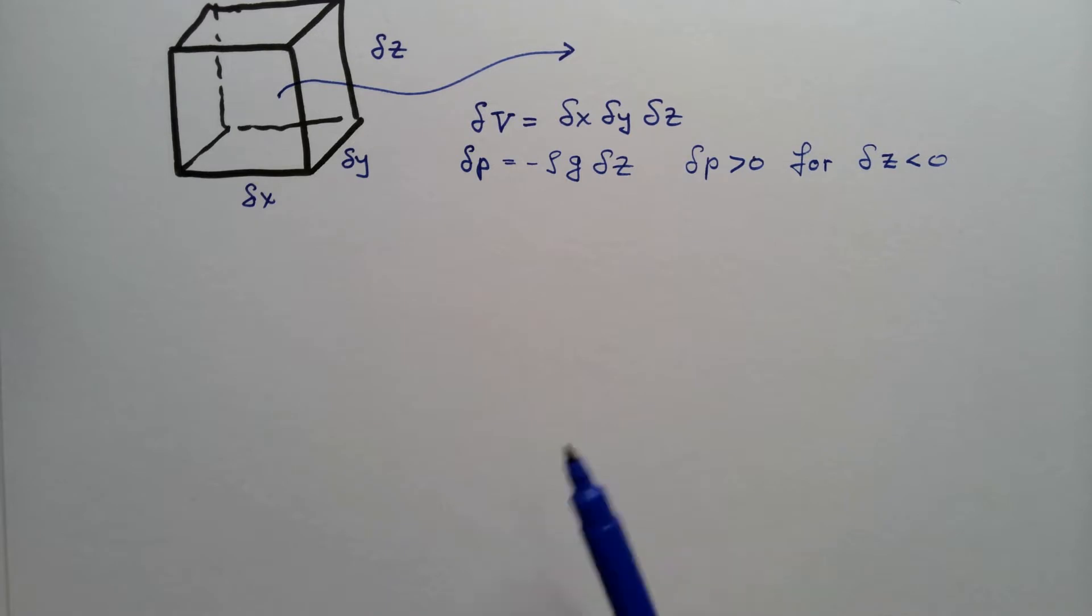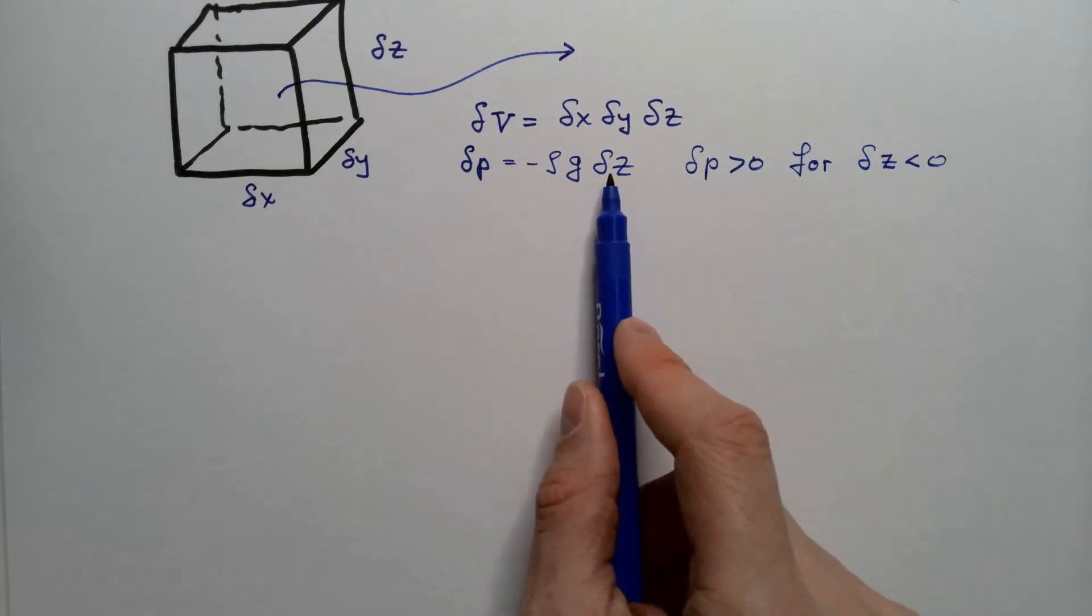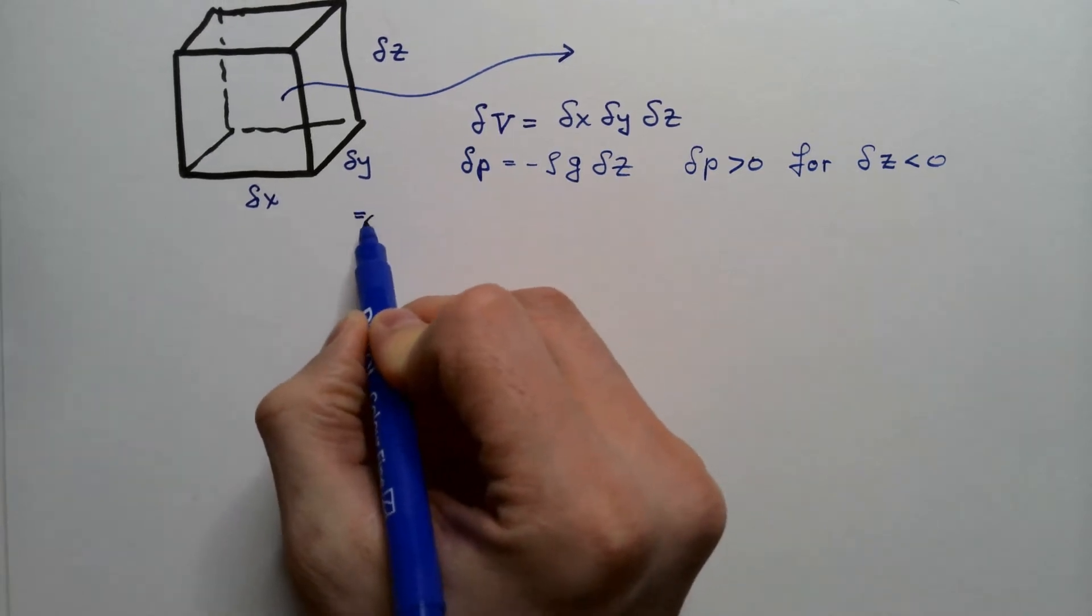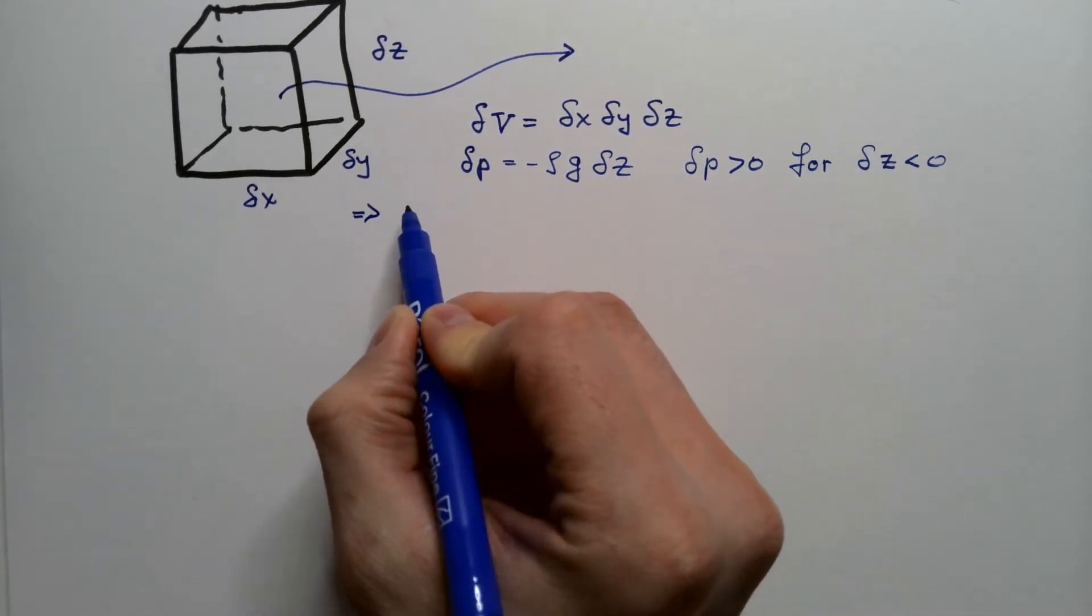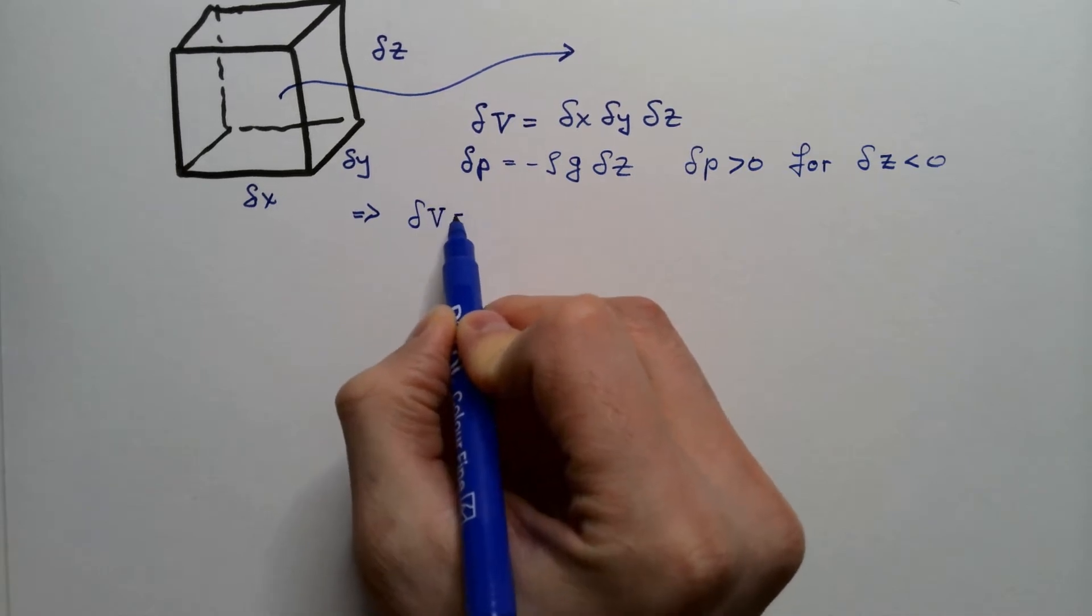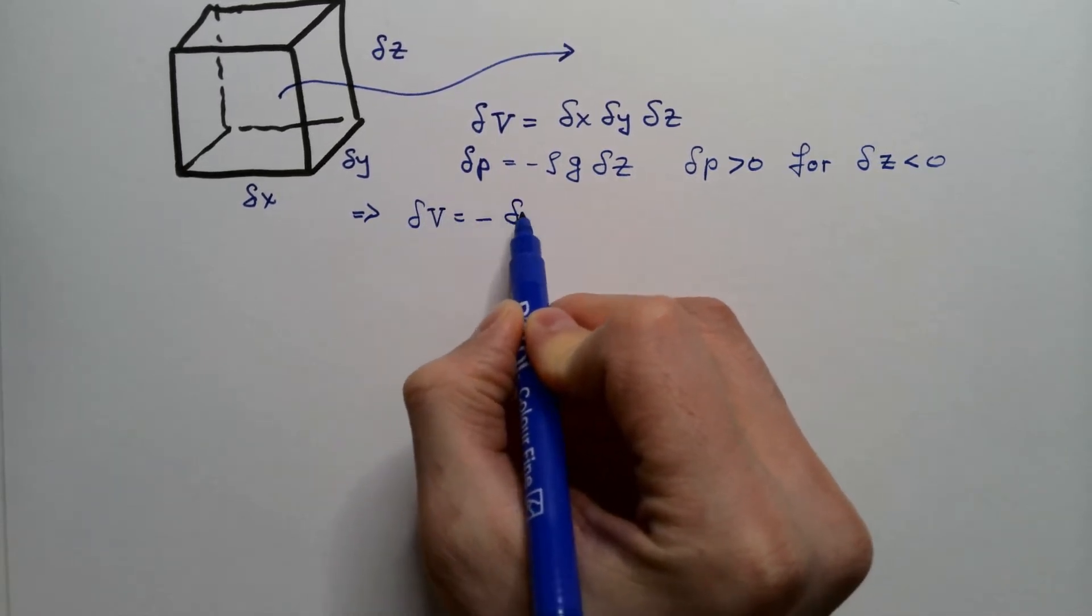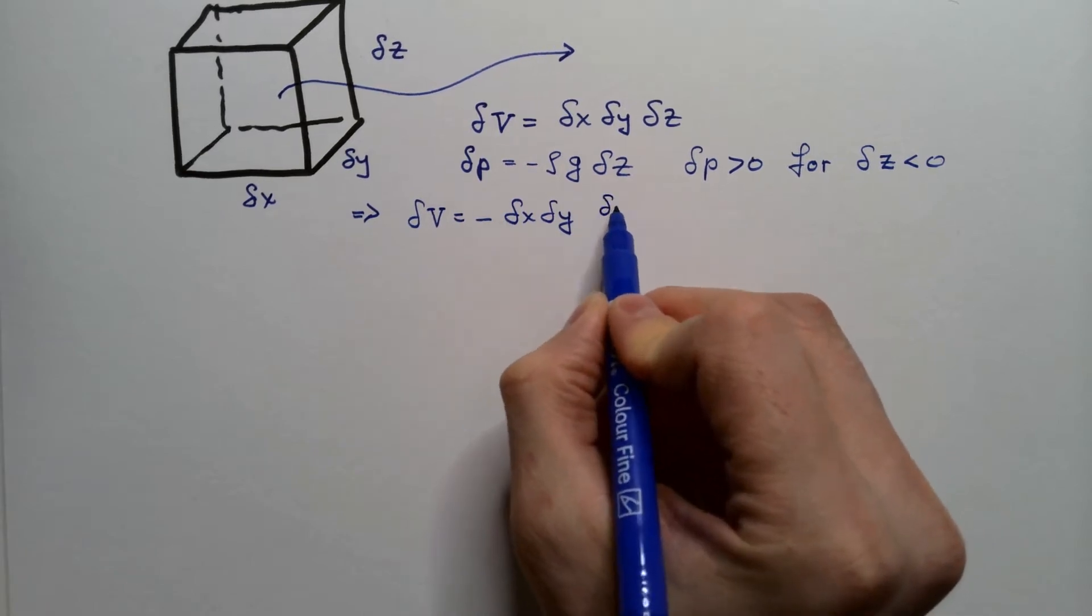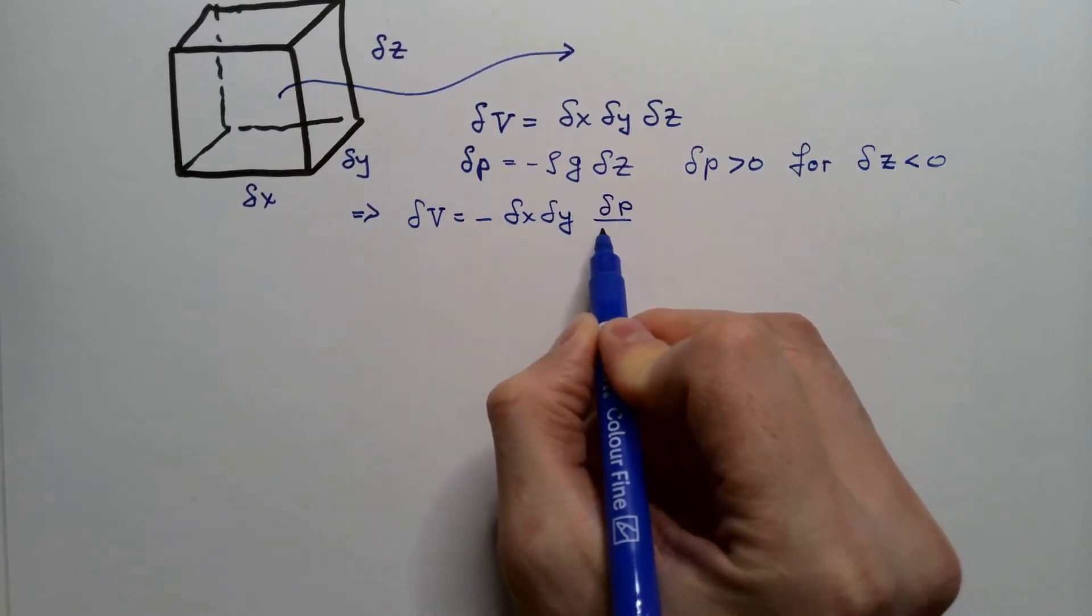So if I express this equation in terms of delta z and substitute here, I will get that delta V is equal negative delta x delta y delta p over rho times g.